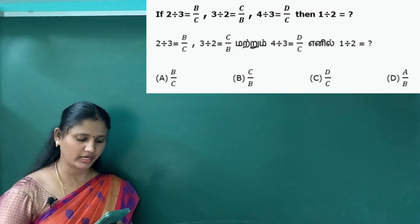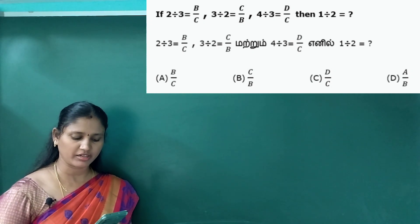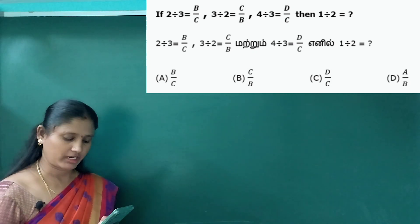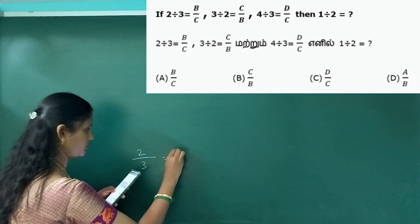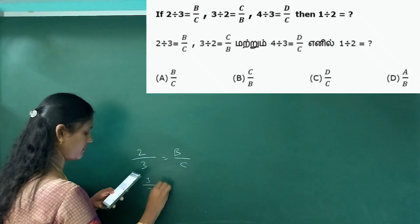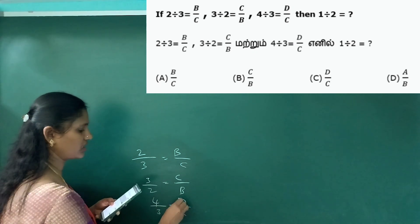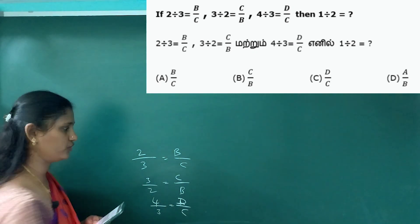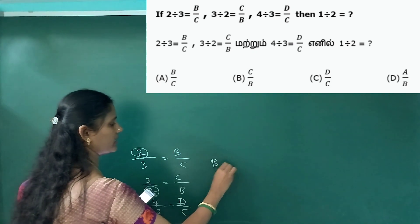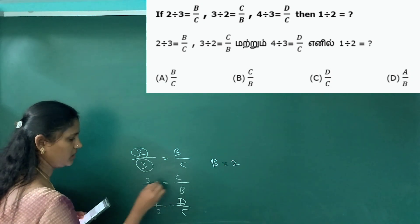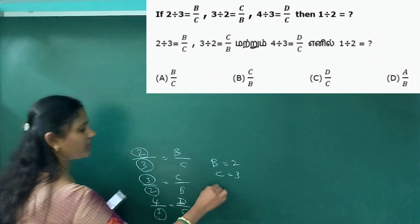Now: 2 divided by 3 equals b by c; 3 divided by 2 equals c by b; 4 divided by 3 equals d by c; and 1 divided by 2. If you look at the pattern, b value is 2, so b equals 2. Then c equals 3, and d equals 4.